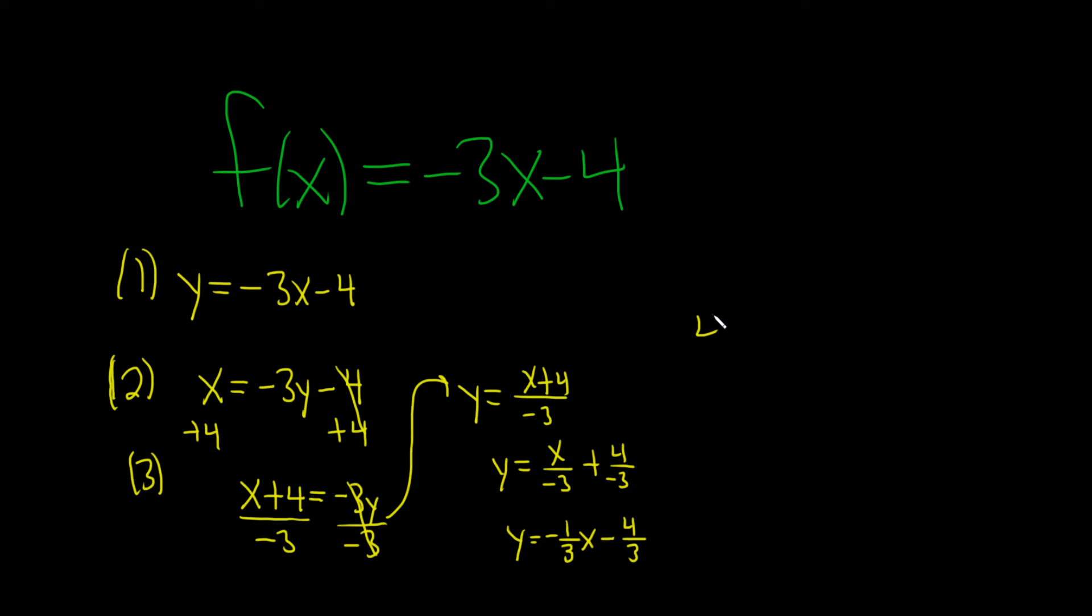And the very last step is to actually rename our function as our inverse function, so using the proper notation. So it would be f inverse of x, and that's equal to negative 1 third x minus 4 thirds. And so that would be the inverse function.